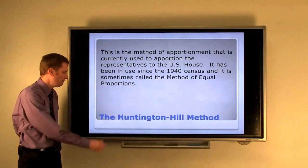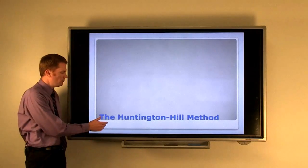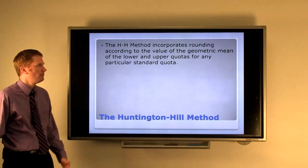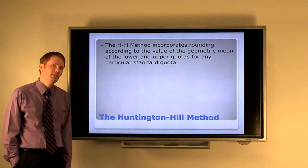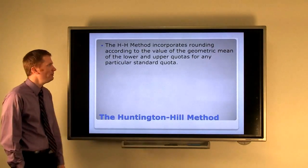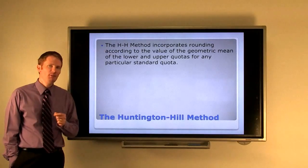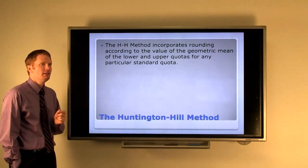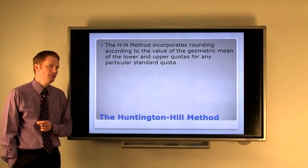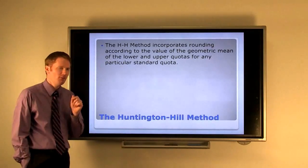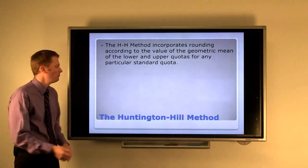So how does it work? It's similar to Adams, Jefferson, and Webster's method in that we have a modified divisor. It's just one last new way of rounding. We incorporate rounding according to the value of the geometric mean of the lower and upper quotas for any particular standard quota. That's a mouthful of mathematical terms, so I'm going to try to break that down for you.